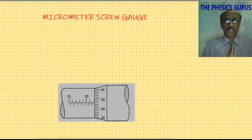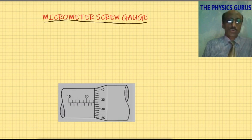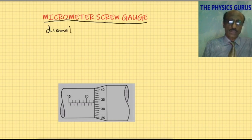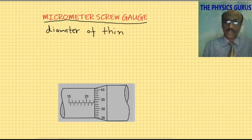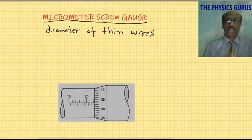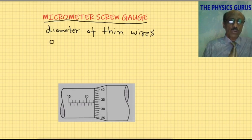The micrometer screw gauge is the instrument we will discuss today. Its basic purpose is to find the diameter of very thin wires and the diameter of other very tiny objects. The least count of the micrometer is 0.01 millimeter.